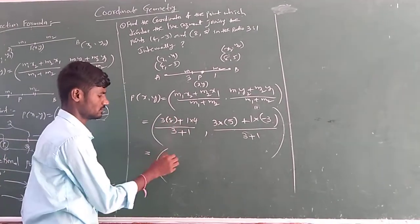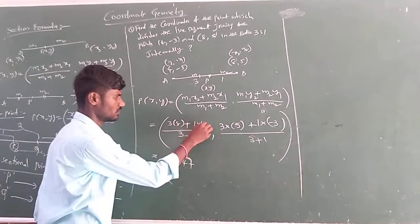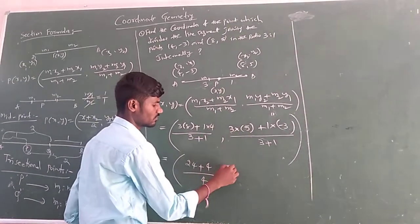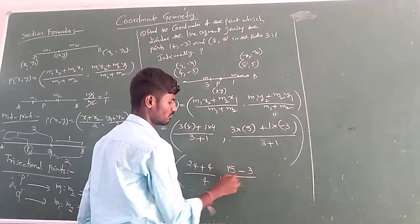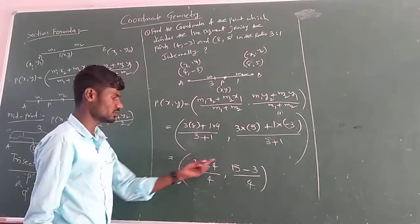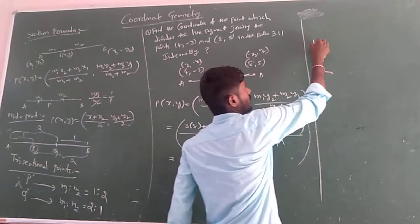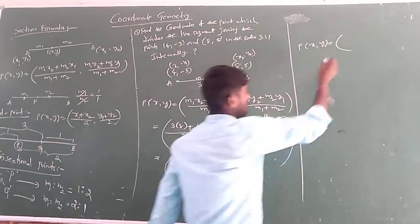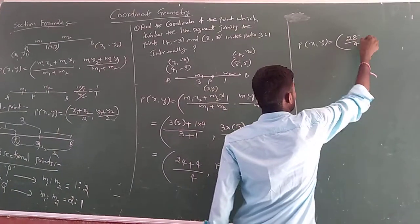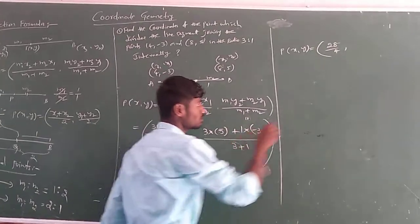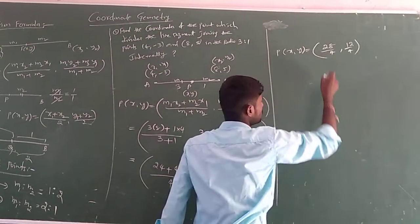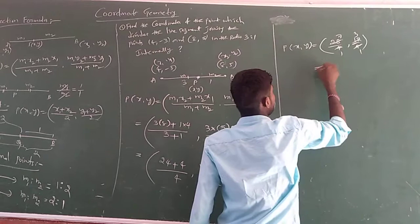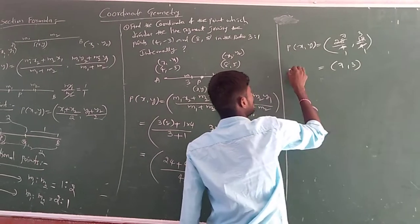Next, 3 into 8 is 24. Plus 1 into 4 is 4. By 3 plus 1 is 4. 3 into 5 is 15. Plus 1 into minus is minus. 1 into 3 is 3. By 4. Next, 24 plus 4. So to find P of X comma Y, 24 plus 4 is 28. 28 by 4. Comma. 15 minus 3 is 12. 12 by 4. So now see here. 4 into 7. 4 into 3. What is that point? 7, 3. This is a point P of X comma Y.